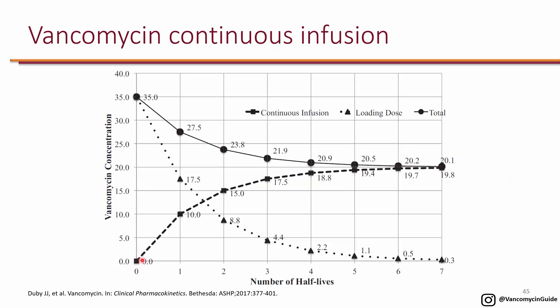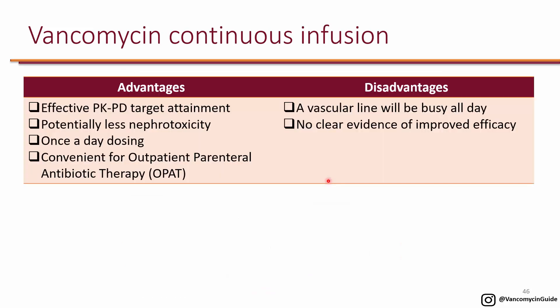If you do continuous infusion without a loading dose, you get a slow rise to steady state. If you give a single loading dose first and then start the continuous infusion, you get an initial peak followed by a flat line after 24 hours. That would be the best approach to achieve the right AUC.